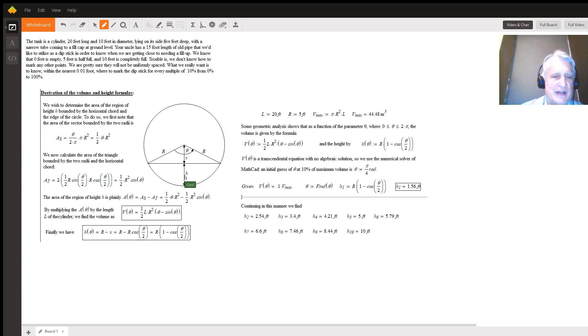Finally, we calculate the height h as r minus x, which is r minus r cos(θ/2), or r times (1 - cos(θ/2)).